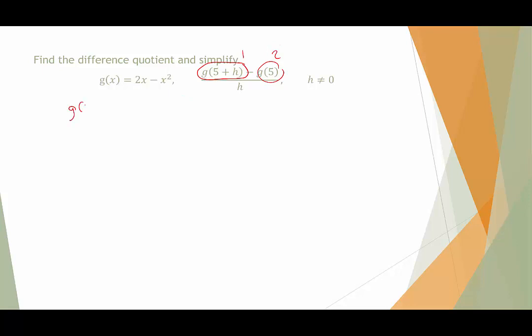So first, we're going to look at g(5+h). And again, what this means is that anywhere in this function I see an x, I'm now replacing it with 5 plus h. So that would be 2 times (5+h) minus (5+h) quantity squared. We want to be super careful when we see that subtraction sign because this whole thing needs to be subtracted, which means everything is going to turn to the opposite sign.